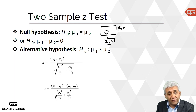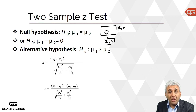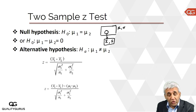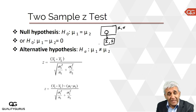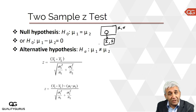The null hypothesis here is that mu1 is equal to mu2 — meaning the mean volume filled by two machines is the same, or the salary of people in two cities is the same. We can rewrite the null hypothesis as mu1 minus mu2 equals 0, rather than saying mu1 equals mu2. That means the difference is zero.